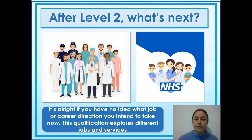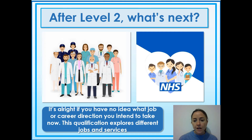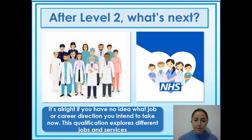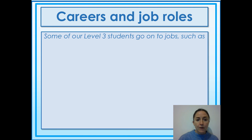What would happen after Level 2? You could stay at Clapton Girls Academy and do the Level 3 in Health and Social Care, which is equivalent to three A levels. You may not know at the moment what you want to do, but you might discover this through studying the course.